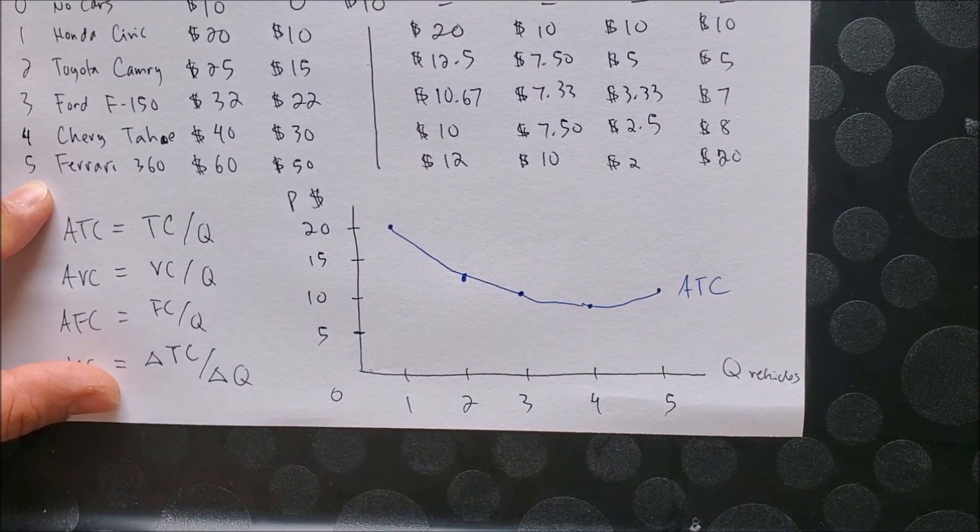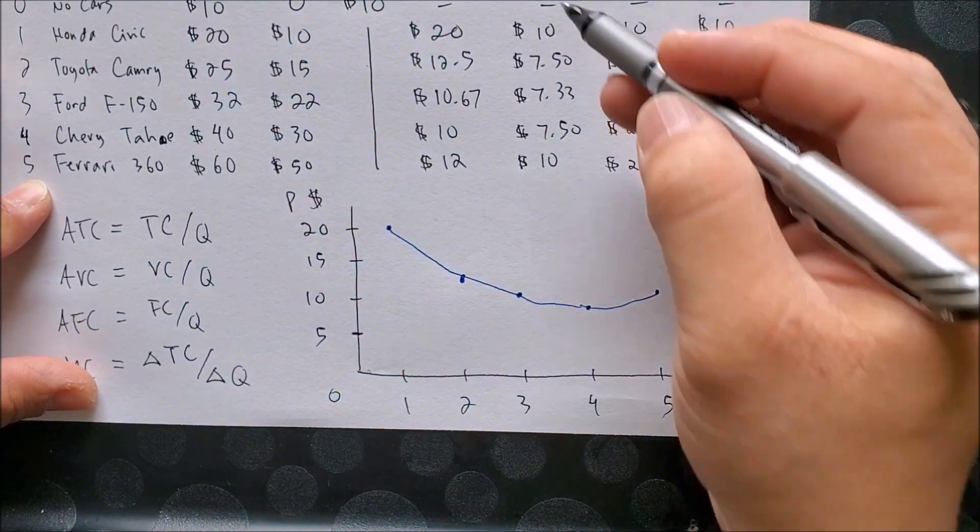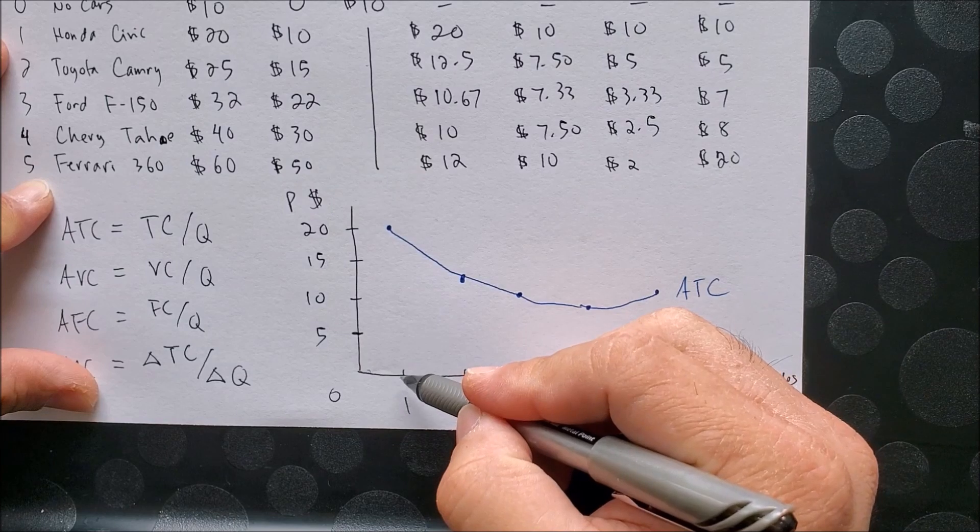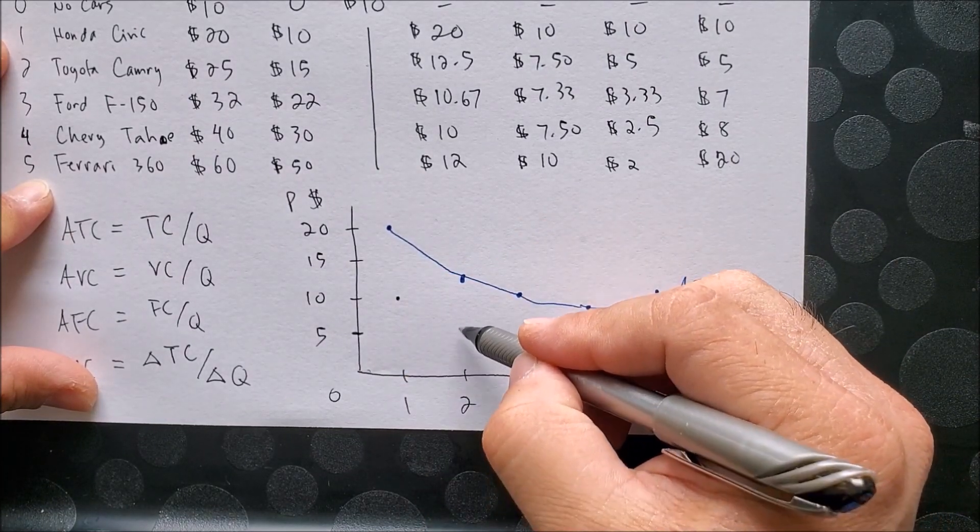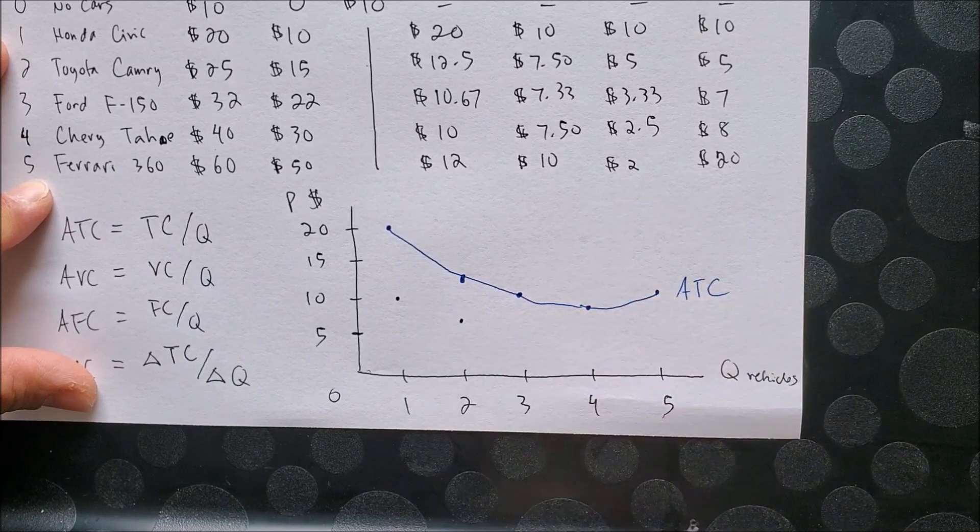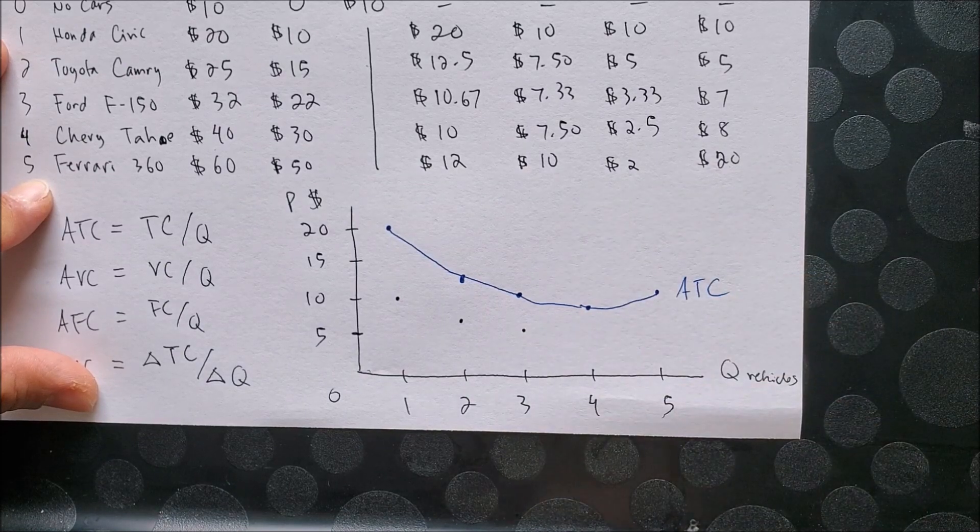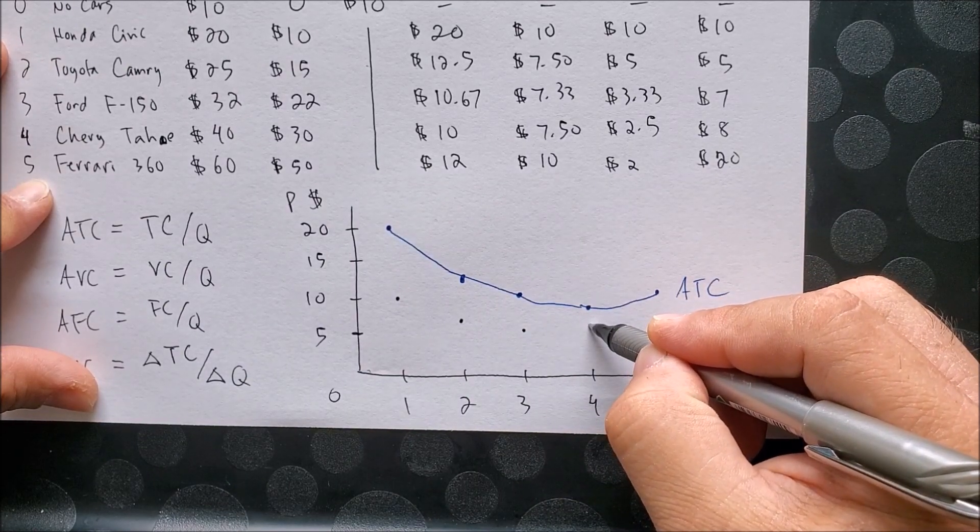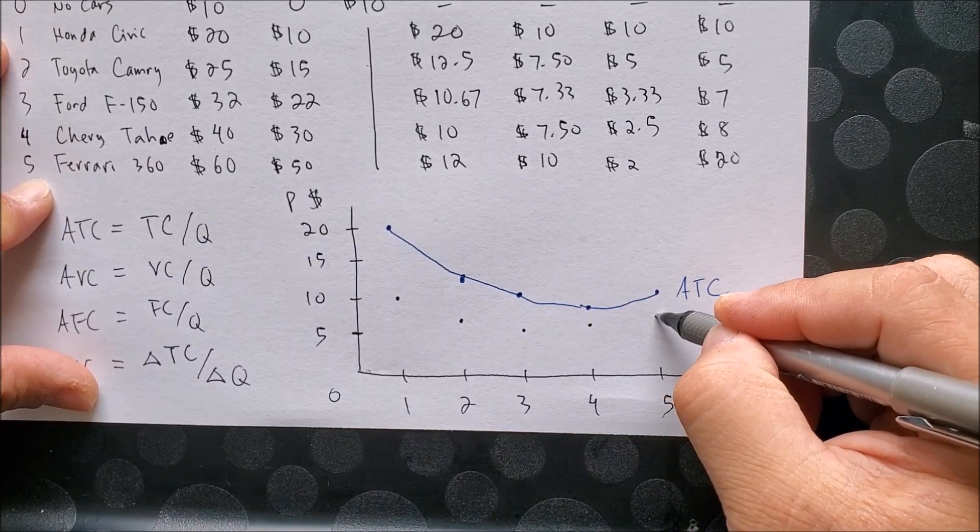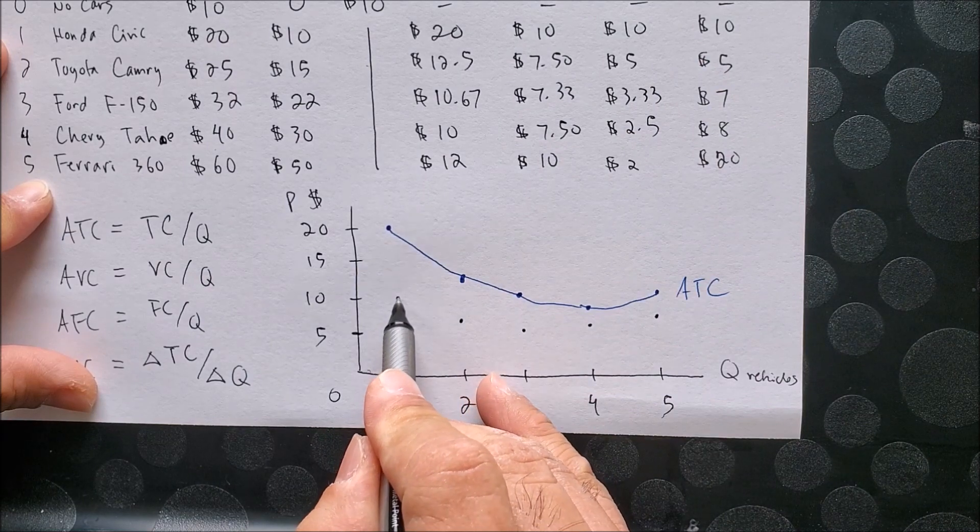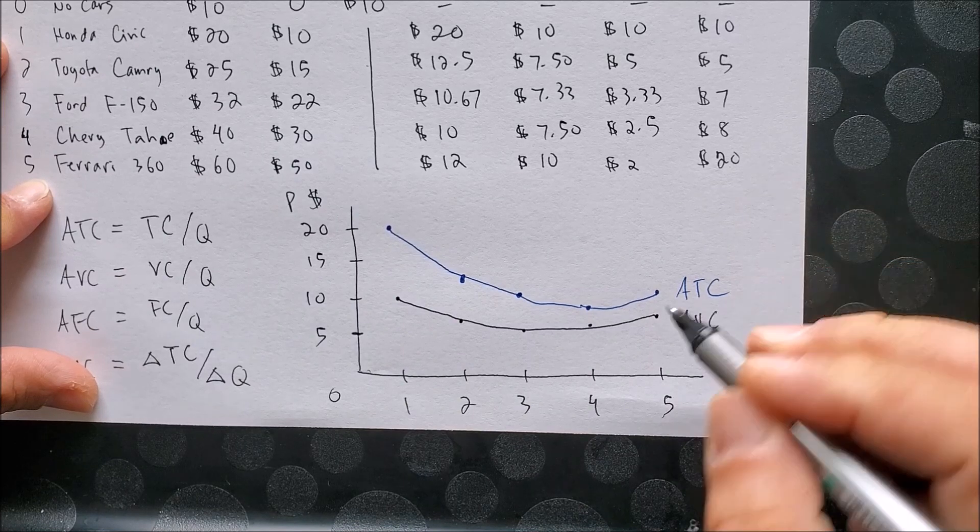Now we can use my black pen here to also graph AVC. So at one vehicle we have $10. At two vehicles we have $7.50, three vehicles $7.33, four vehicles $7.50, and five vehicles $10. Again, this is AVC. We then draw our curve as such, AVC.